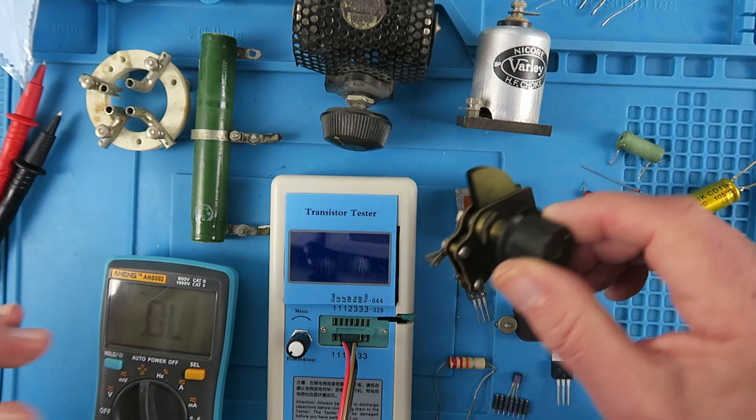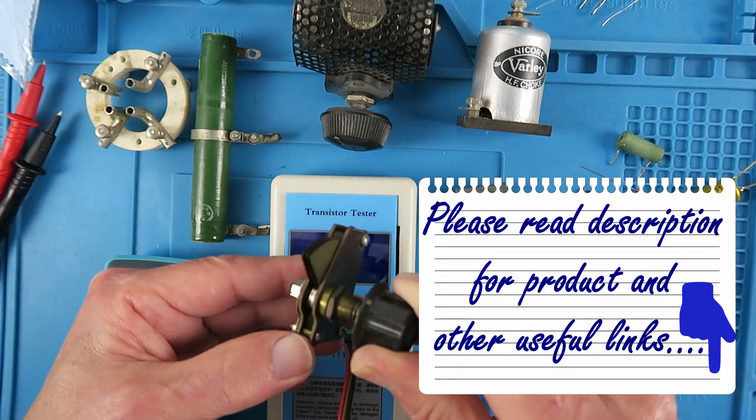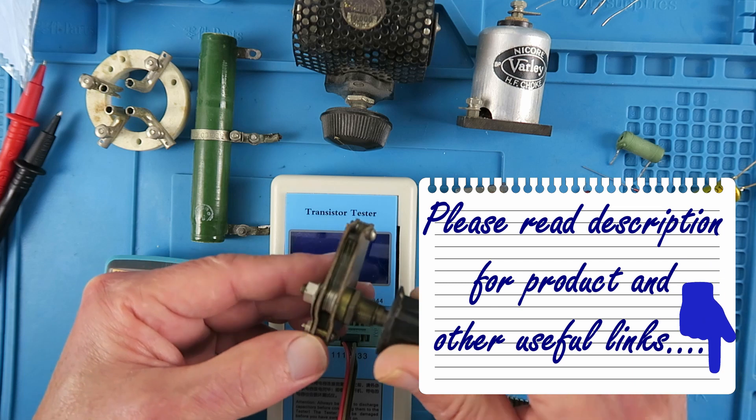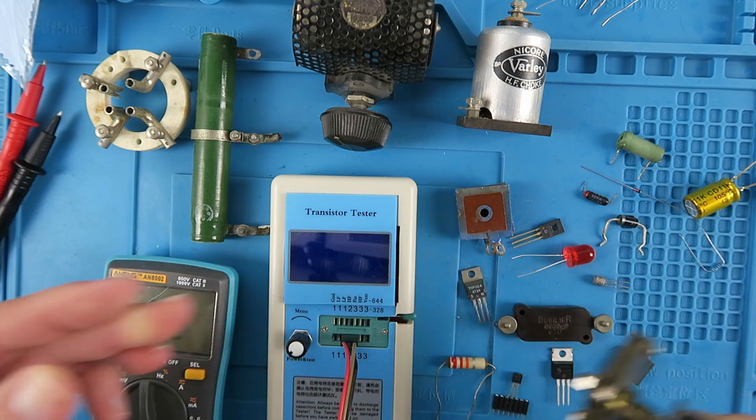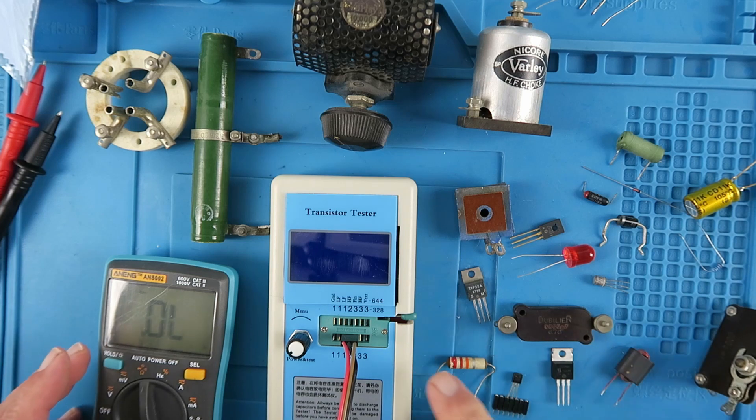And this is a variable capacitor. In those days you would vary the capacitance by sliding the plates, as you can see here. So without further ado, let's put some of these components into the tester and see what it makes of them.